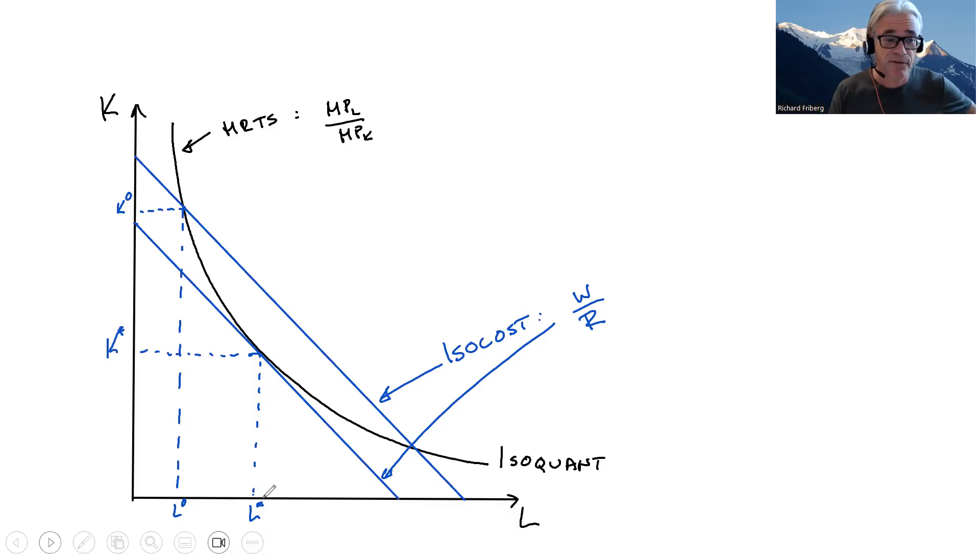At the point of tangency gives the cost minimizing choice of inputs. And at this point, the ratio of marginal products is equal to the ratio of input prices.